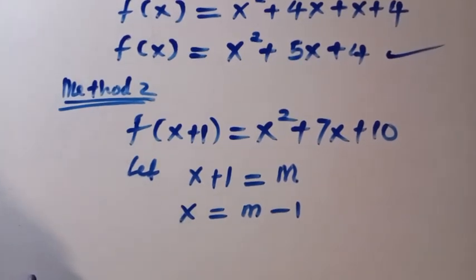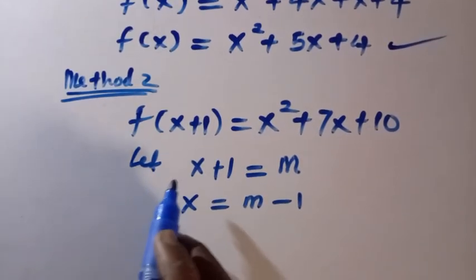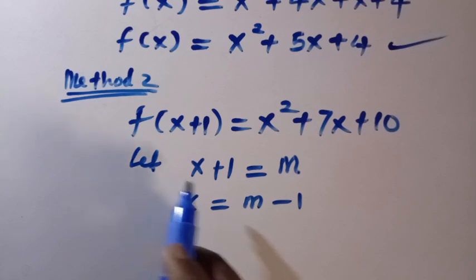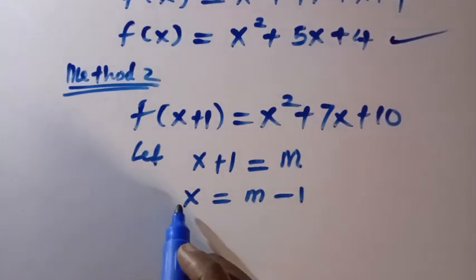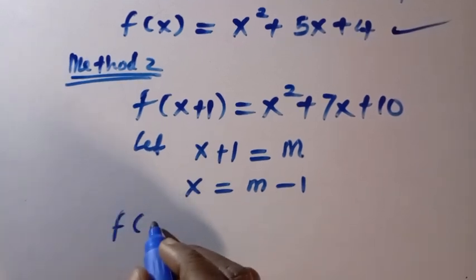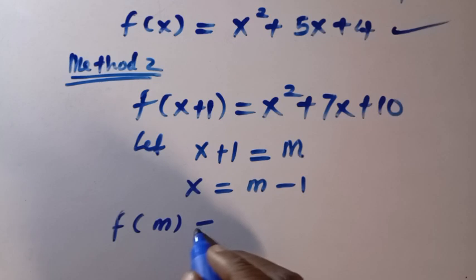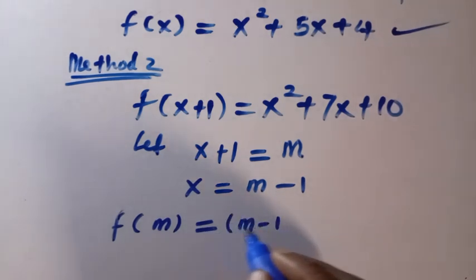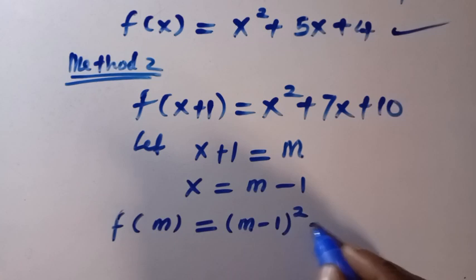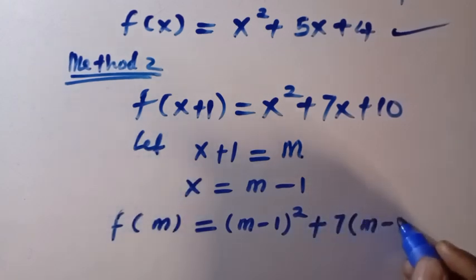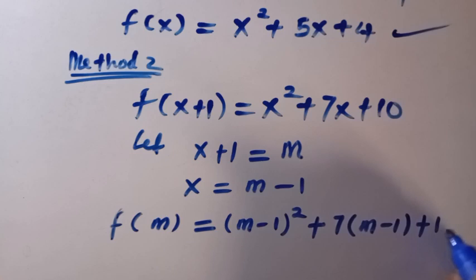Then, from here, we can see that, anyway, we see f of x plus 1, x plus 1, we replace it with m, and anyway, we see x, we replace it with m minus 1. So, f becomes f of m equals m minus 1, raised to power 2, plus 7 into bracket of m minus 1 plus 10.